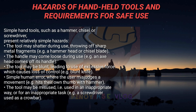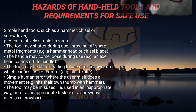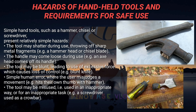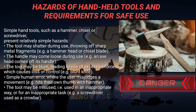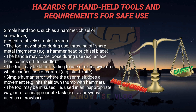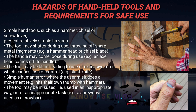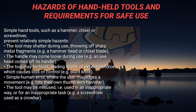Hazards of handheld tools and requirements for safe use. Simple hand tools such as a hammer, chisel, or screwdriver present relatively simple hazards. The tool may shatter during use, throwing off sharp metal fragments – for example, a hammerhead or chisel blade. The handle may come loose during use, for example an axe head coming off its handle. There are also simple human errors where the user misjudges a movement, for example hitting their own thumb with a hammer.